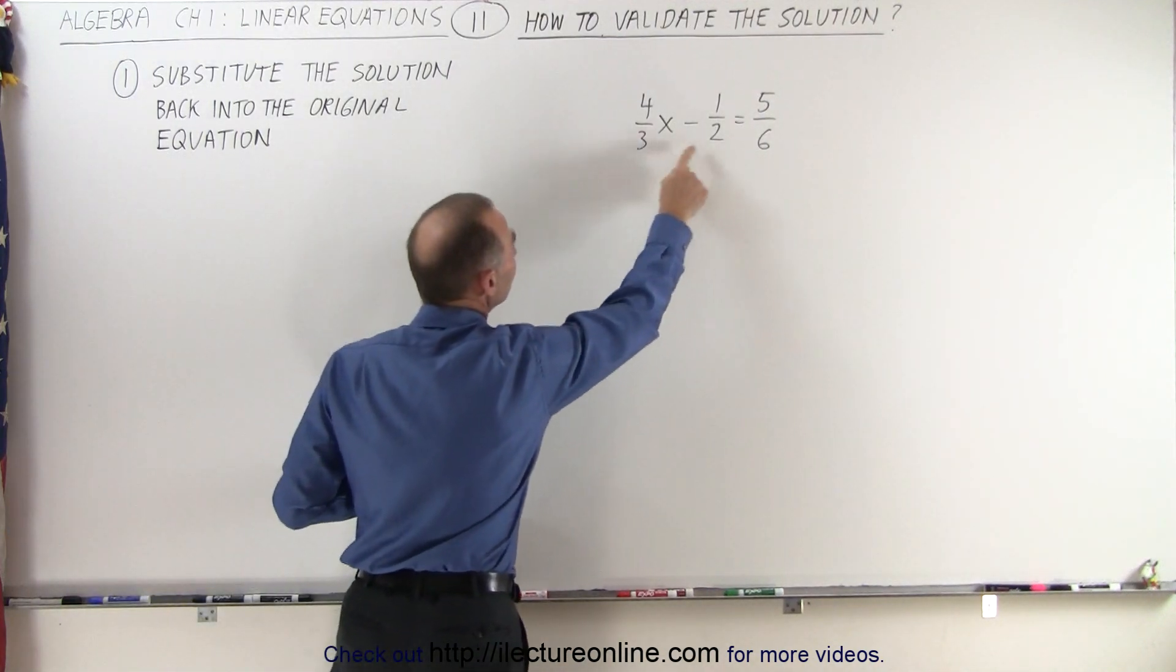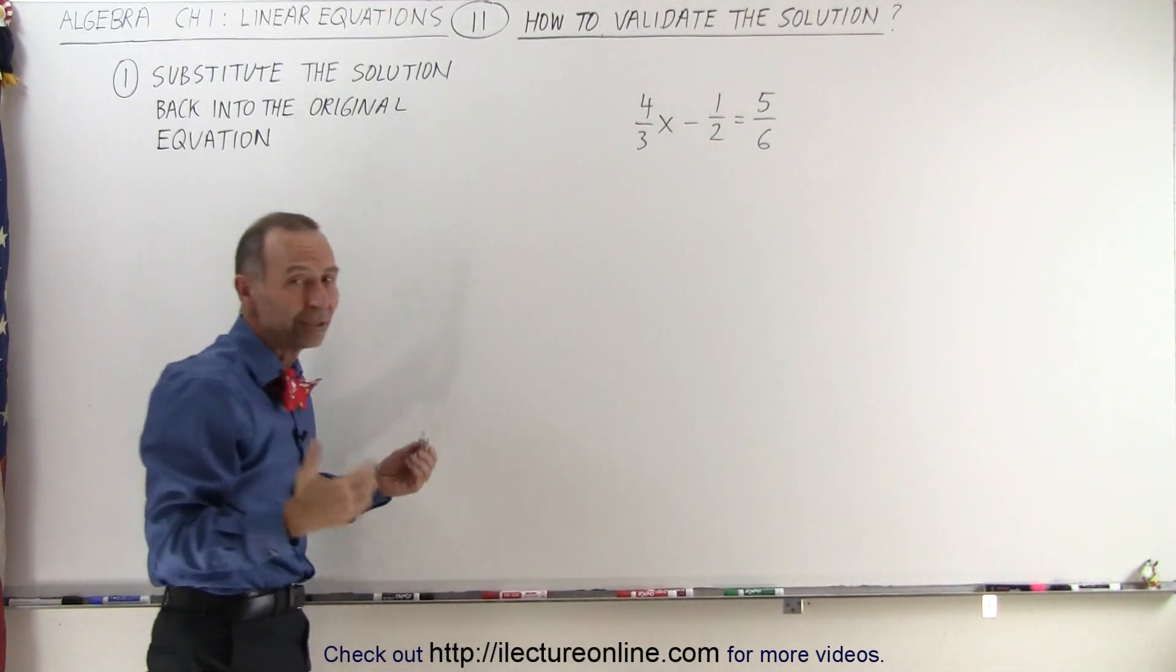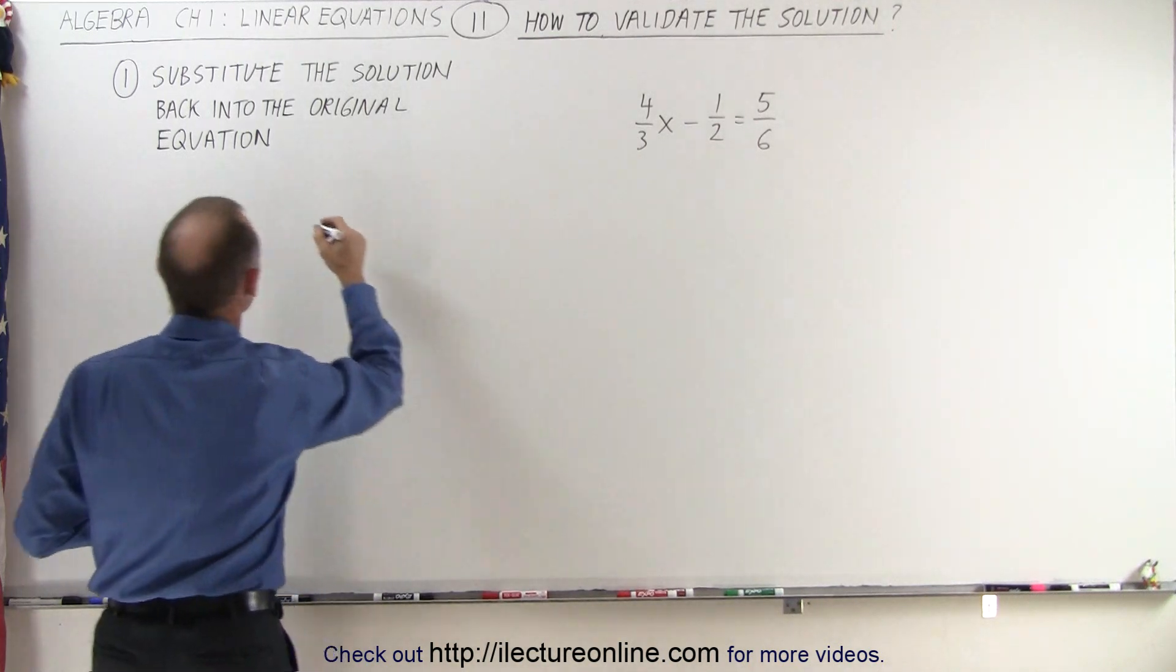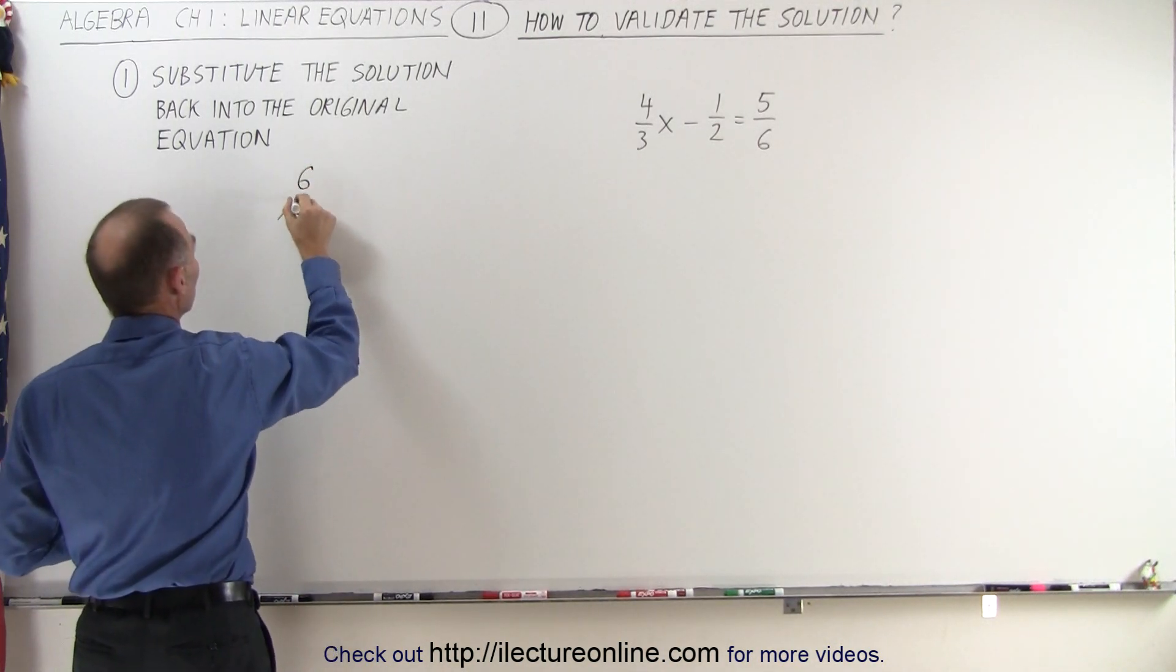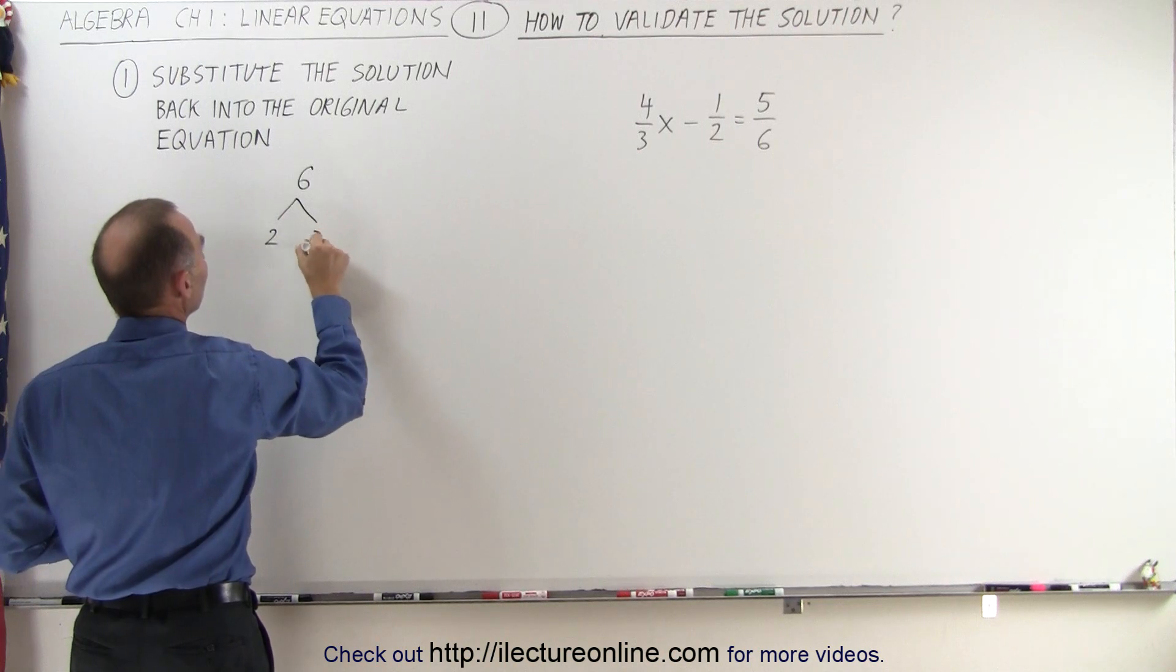Well, since 3 and 2 are already prime numbers we don't need to break that one down, but we can break down the number 6, and the number 6 can be written as the product of 2 and 3.